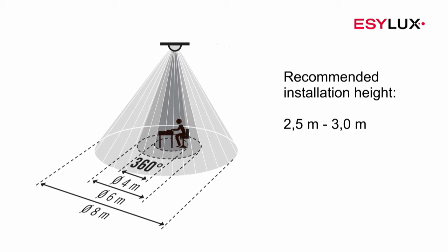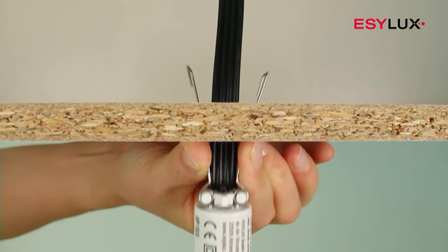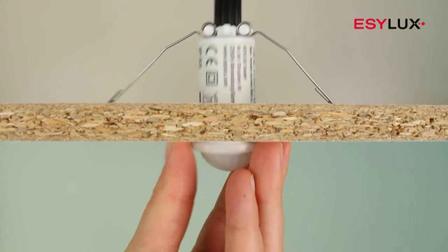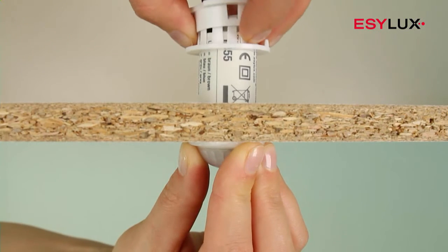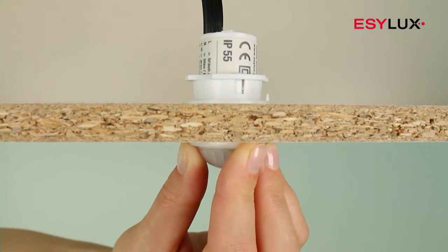It's important that the detector has an unobstructed view of employees and their workplace. The design and size of the mini series means it's barely visible in the room. Choose the mounting option most suited to the installation position.